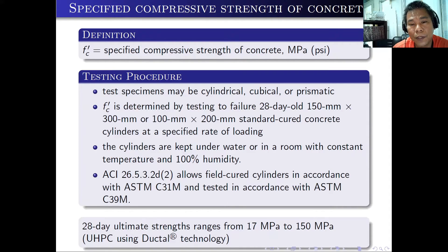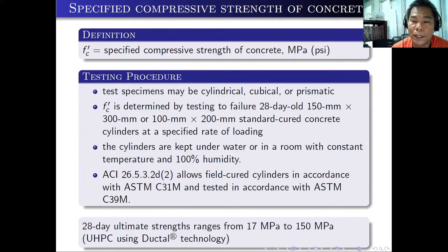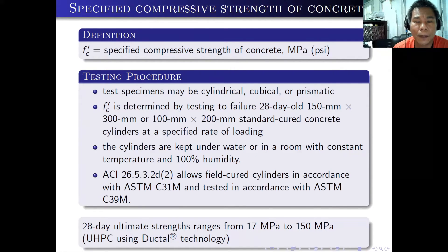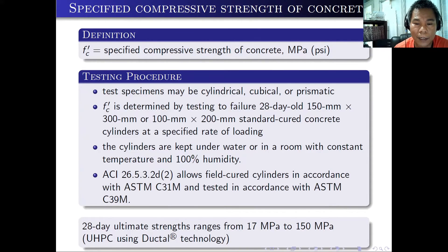In the United States they use cylindrical specimens, which is what we follow. In Europe they use cubes. FC prime is determined by testing to failure 28-day-old 150 mm diameter by 300 mm height cylinders, or the smaller 100 mm diameter by 200 mm standard cured concrete cylinders, at a specified rate of loading. The cylinders are kept under water or in a room with constant temperature and 100% humidity. ACI 26.5.3.2D allows field-cured cylinders in accordance with ASTM C31 and tested in accordance with ASTM C39.